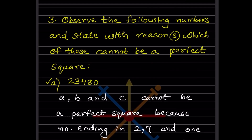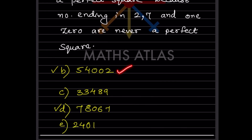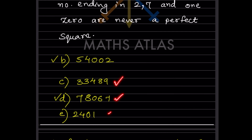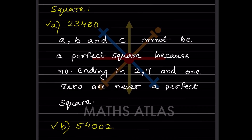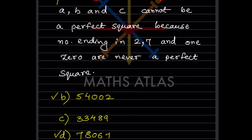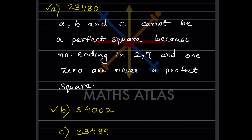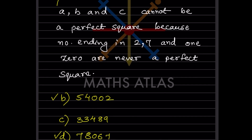Observe which numbers cannot be perfect squares: 23480 and 54002 are given. A perfect square never ends in 2, 7, or an odd number of zeros (one zero). Since 23480 ends in one zero and 54002 ends in 2, these cannot be perfect squares. Numbers ending in 2, 7, or one zero are never perfect squares.